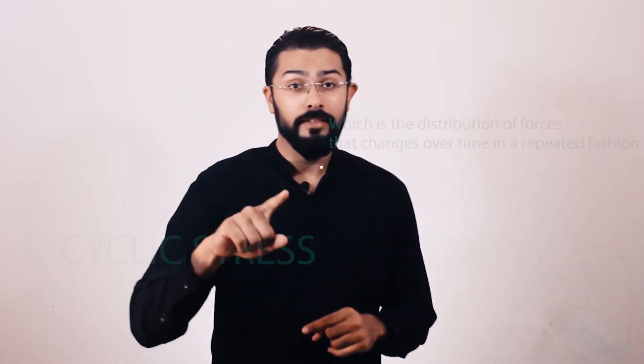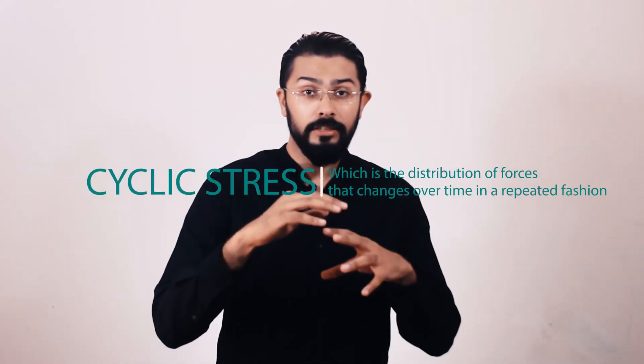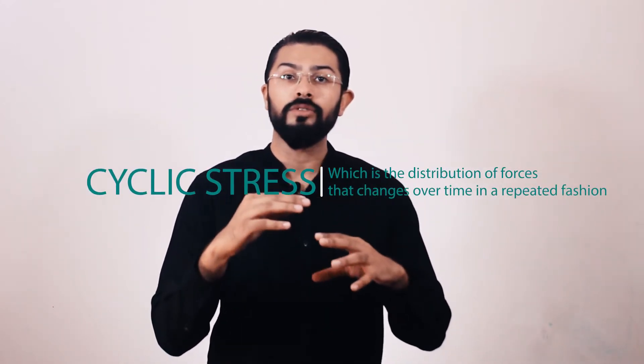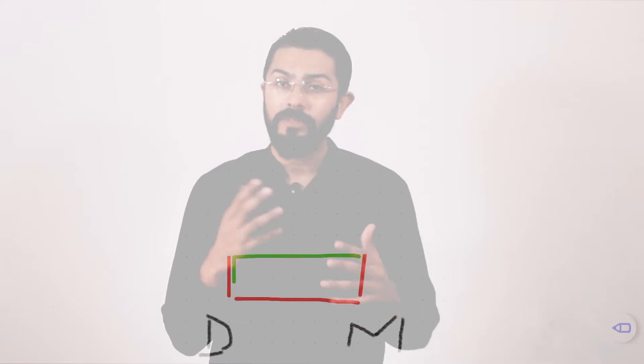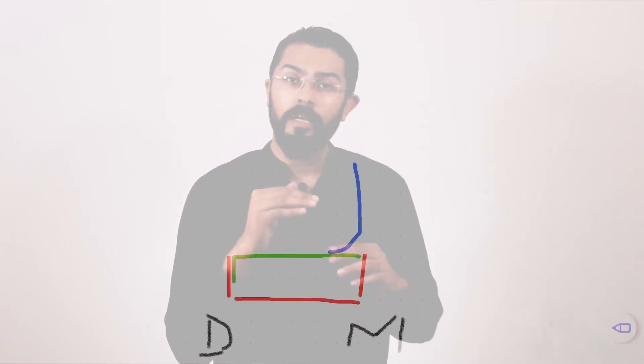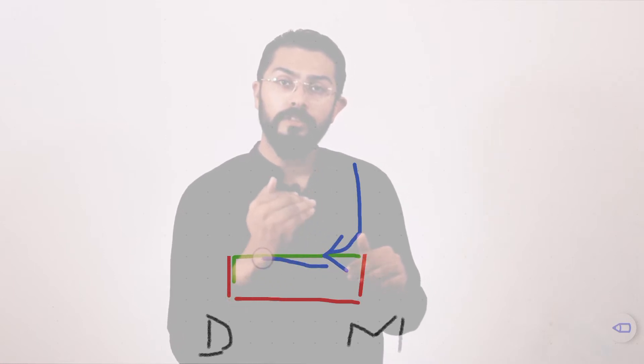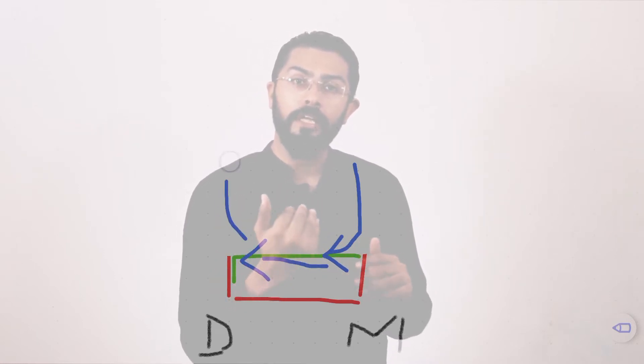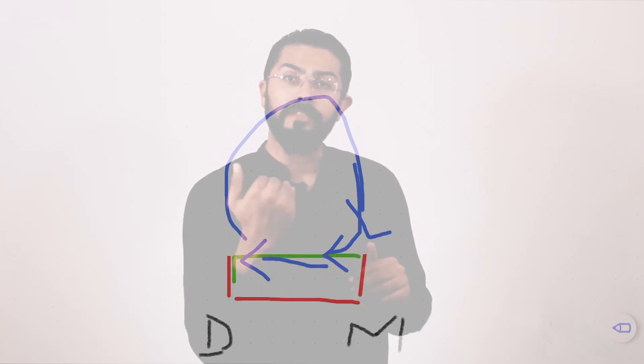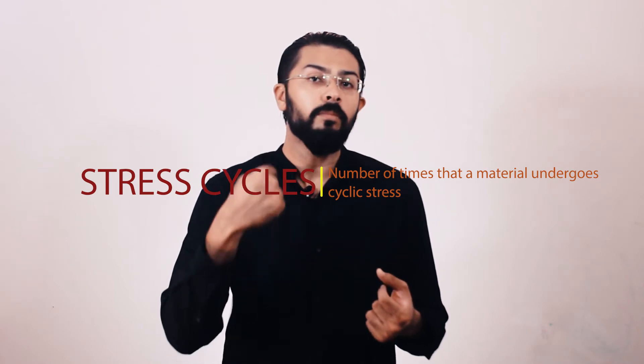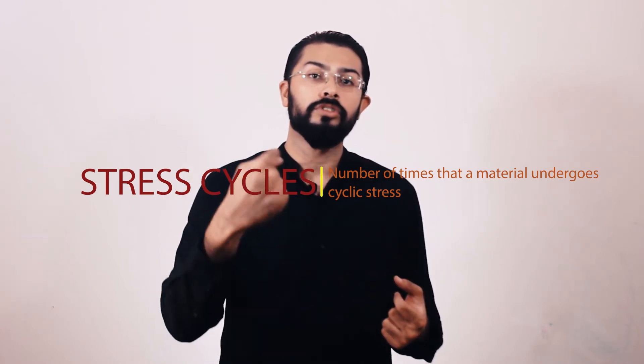Now, before we dive into the fatigue properties, I want you to get familiar with a few terms. The first one is cyclic stress, which is the distribution of forces that changes over time in a repeated fashion — meaning if the load is applied on the mesial side, it would shift to the distal side and keep shifting from mesial to distal in a cyclic fashion. The second terminology is stress cycles, which is basically the number of times the material undergoes stress.